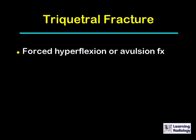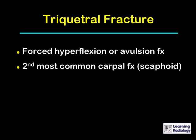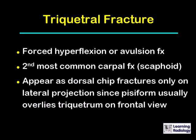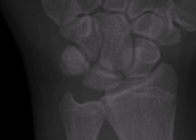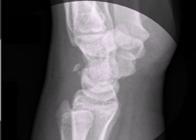A triquetral fracture occurs from forced hyperflexion or sometimes an avulsion fracture. It is the second most common carpal fracture after scaphoid fractures. It appears as a dorsal chip fracture, usually only visible on the lateral projection of the wrist, since the pisiform usually covers the triquetrum on the frontal view. It is invisible on the frontal examination, but on the lateral examination a small chip fracture from the dorsal aspect of the wrist is visible.